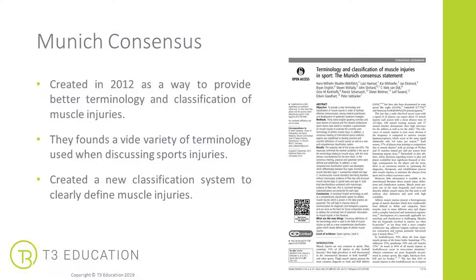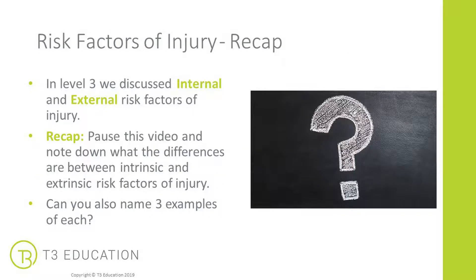The first thing we're going to discuss is the Munich Consensus, created in 2012 to provide better terminology and classification of muscle injuries. A questionnaire was sent to scientists and doctors within professional sports teams, followed by a consensus meeting to create a classification statement. They found a lot of variety in the terminology used when discussing sports injuries, so they came together to clearly define muscle injuries. We'll refer back to the Munich Consensus throughout your level 4 learning, and the journal link is in your online learning.